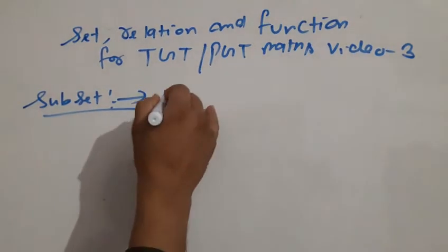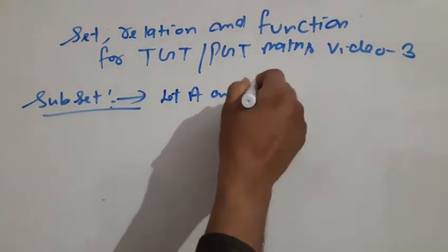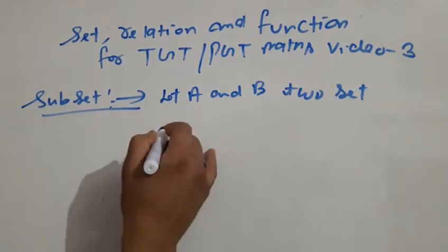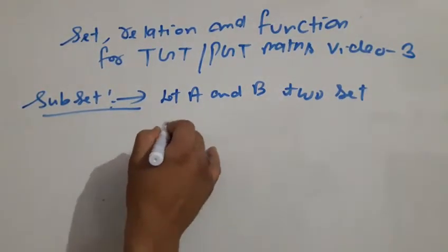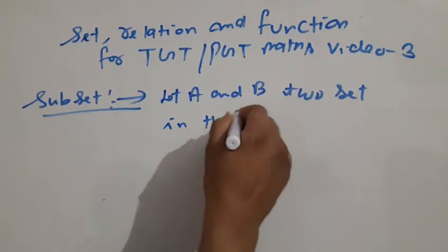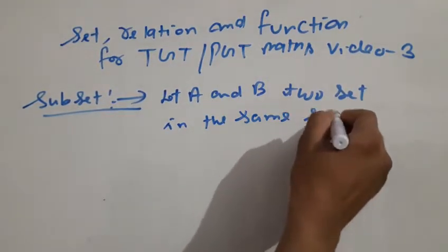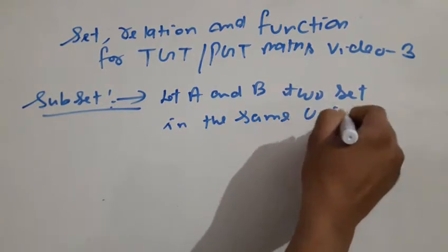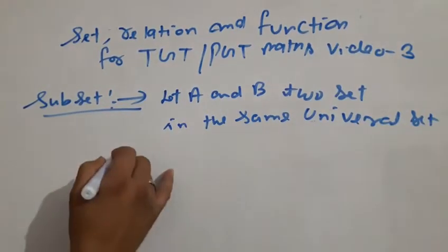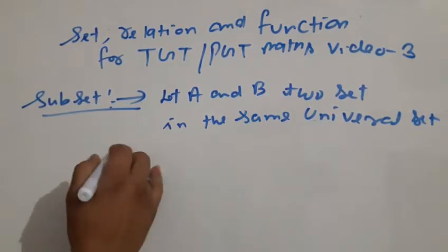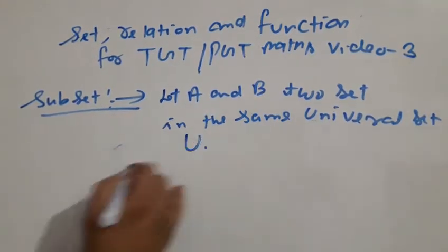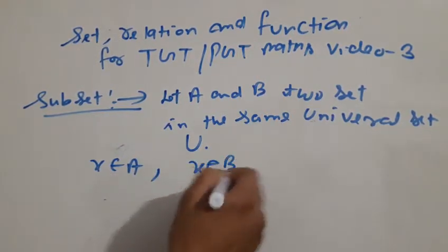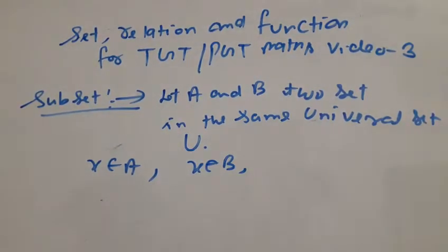Let A and B be two sets in the same universal set U. If x belongs to A and x belongs to B, then A is a subset of B.